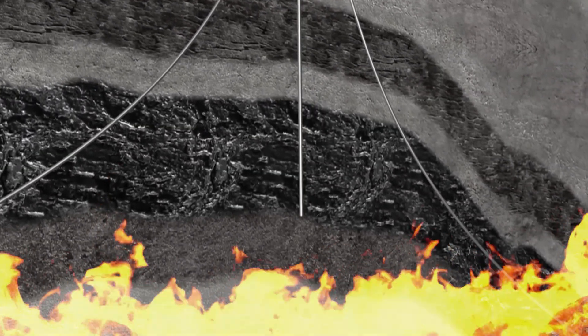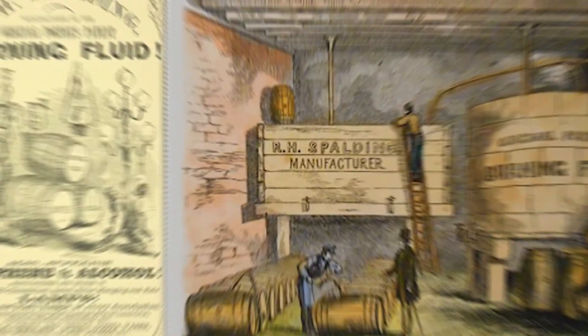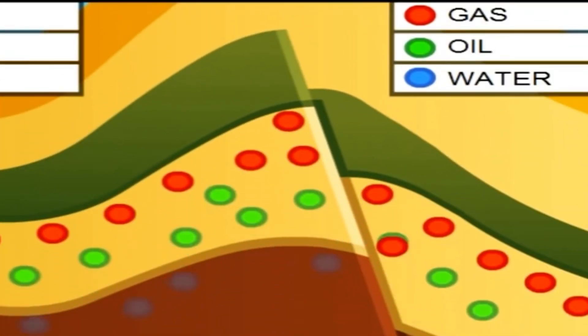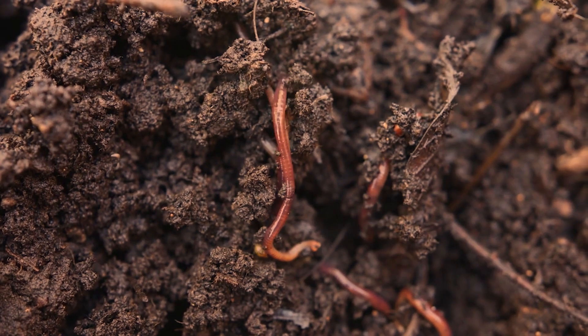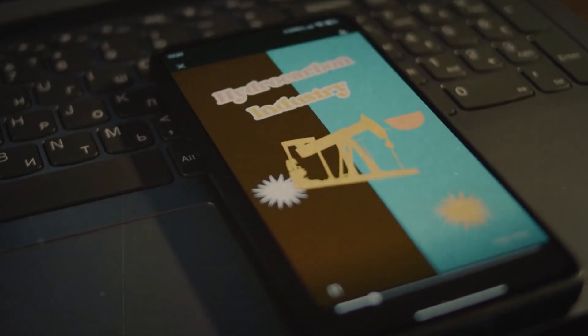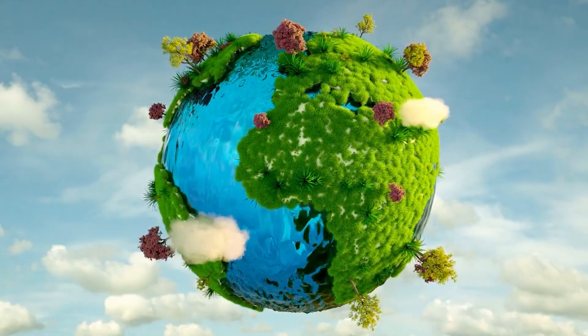Over time, layers of sediment and silt buried this organic material, protecting it from complete decomposition. Oxygen levels in these environments were often very low, which prevented the organic matter from rotting away completely. Instead, the material partially decayed, creating a substance known as kerogen, which is the precursor to oil and gas. Without this accumulation of organic material, the formation of oil and gas reserves would not be possible. The abundance and type of organic matter play a crucial role in determining the quantity and quality of hydrocarbons that eventually form.